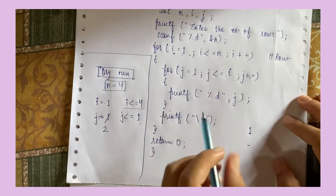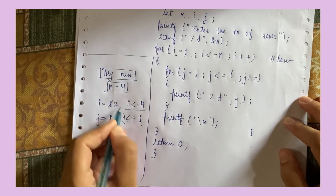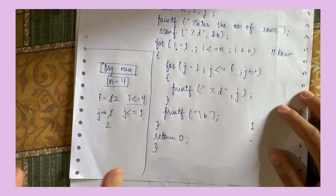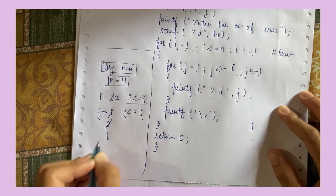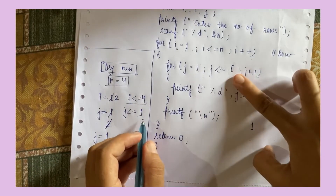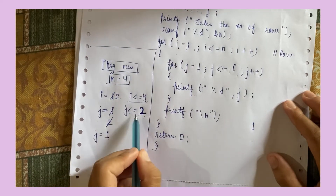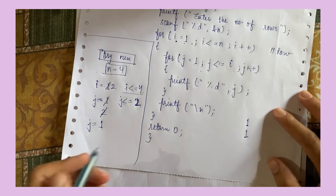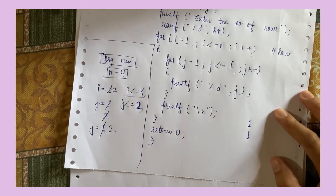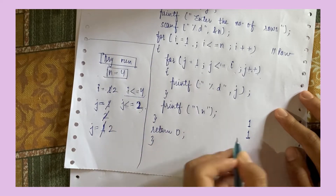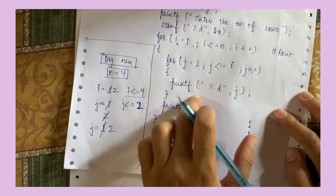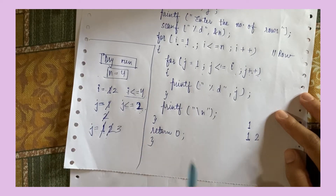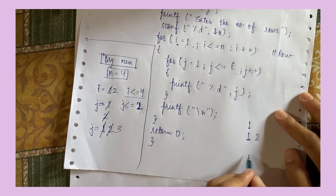Now the outer loop value will be incremented — I will be 2. 2 less than or equal to 4 — condition true. Now it will get inside. J will start from 1 again as a fresh loop. Value of I is 2, so 1 less than or equal to 2 — condition true — we will print J which is 1. Then J increments to 2. 2 less than or equal to 2 — condition true — so 2 will print right after 1. Then J becomes 3. 3 less than or equal to 2 — condition false — it will come out of the loop and the cursor will go to the next line.